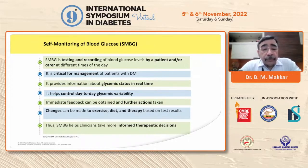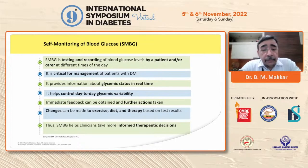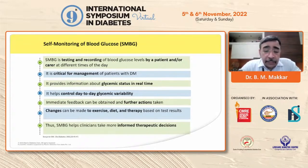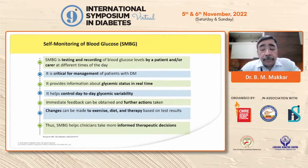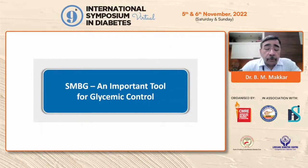SMBG is critical for management of patients with diabetes because without knowing glucose levels, we can't optimize treatment or change dietary factors or exercise. It provides real-time glucose information, helps control day-to-day glycemic variability, and gives immediate feedback for taking further actions — whether changing medication, exercise, or diet. SMBG basically helps clinicians take informed therapeutic decisions and helps patients achieve better glycemic control.